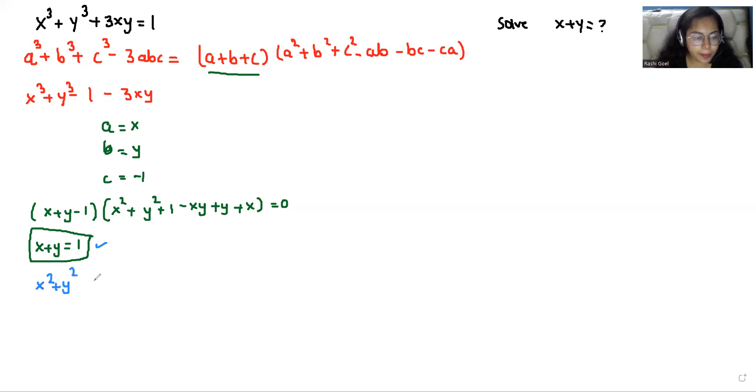The second factor gives x² + y² - xy + x + y + 1 = 0. I'm going to multiply by 2 throughout the equation, so it becomes 2x² + 2y² - 2xy + 2x + 2y + 2 = 0. I can break this as 2x² + 2y² - 2xy + 2x + 2y + 1 + 1 = 0.